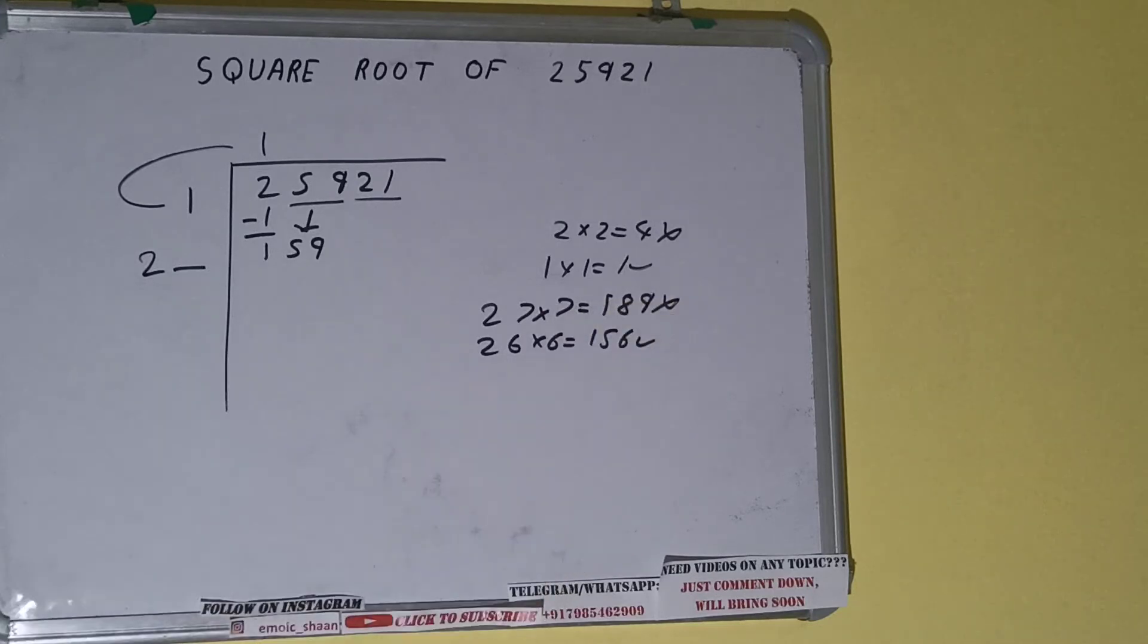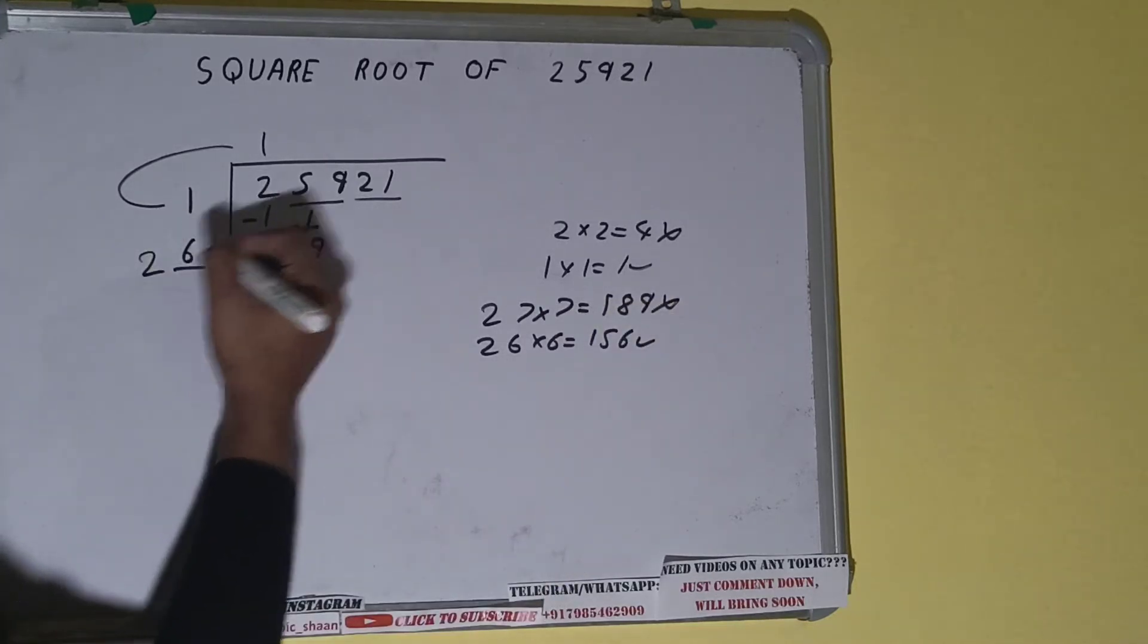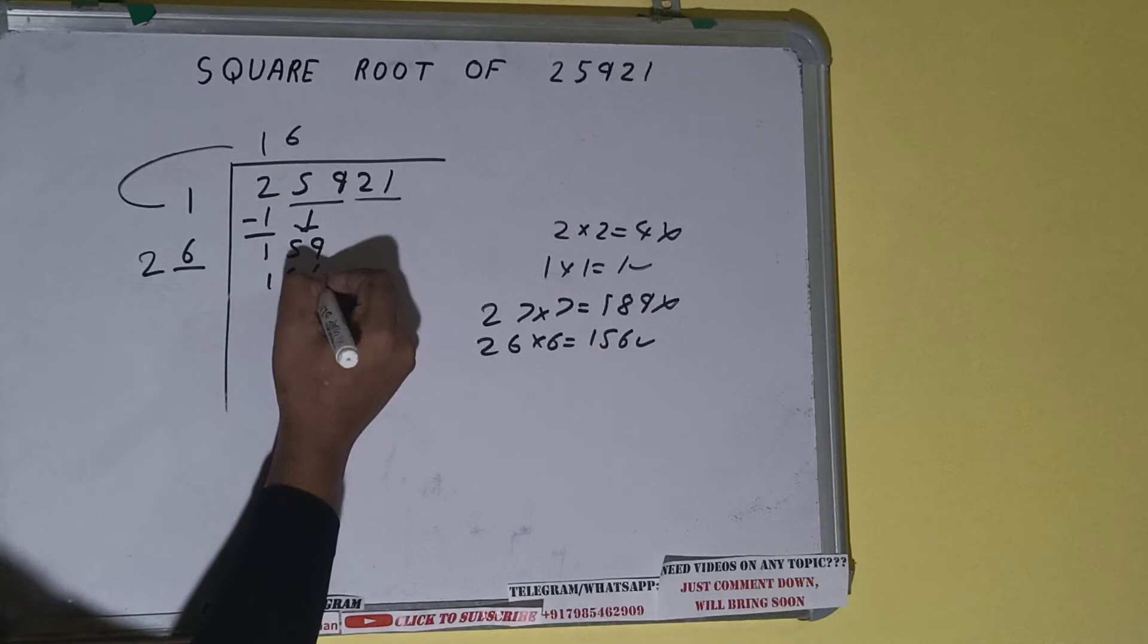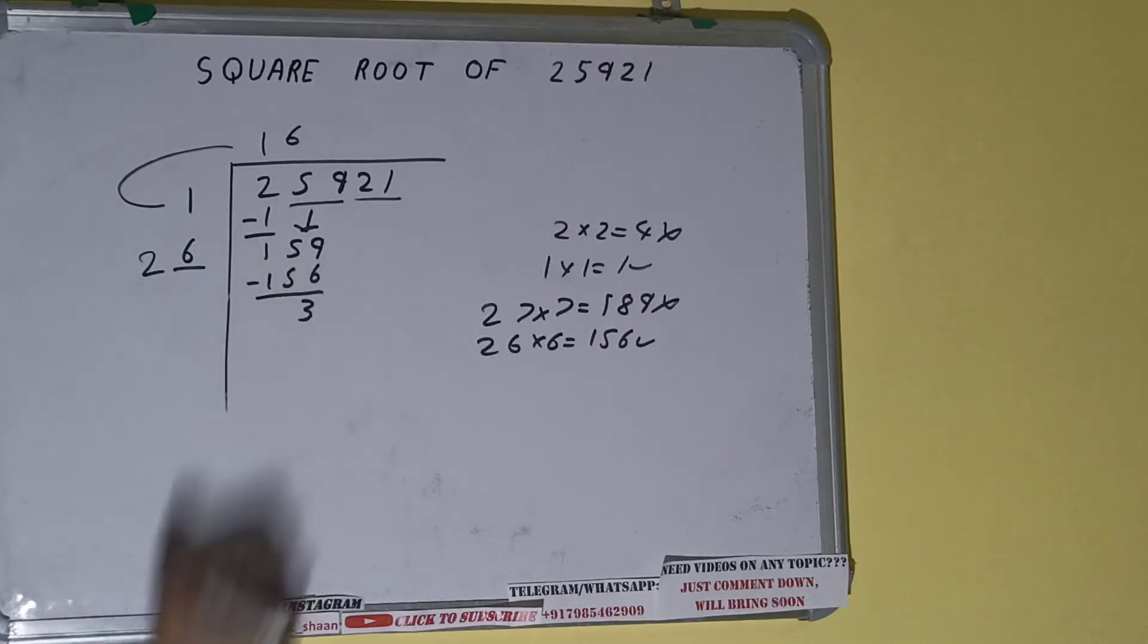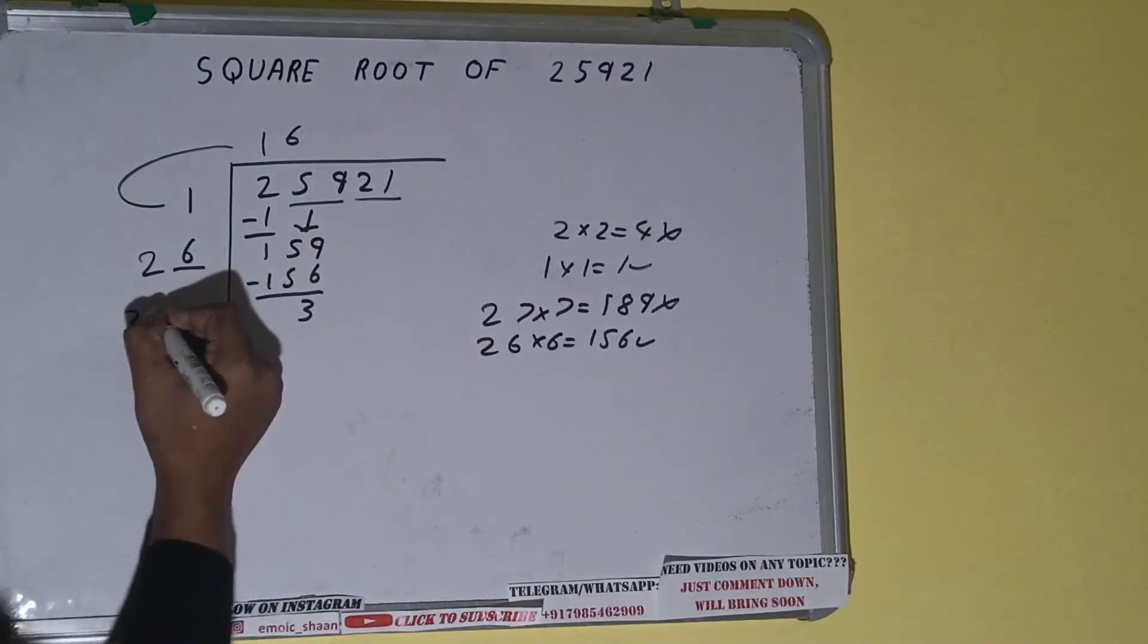So six here and six here, 156 subtract and 3 will be left. Now 26 into 6 we did, so add both. So 26 plus 6 will be 32. So write it here and keep a digit extra.